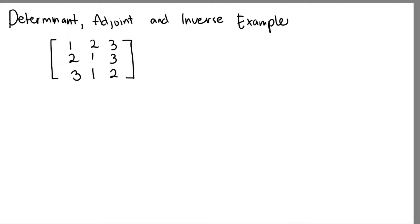In this video, we're going to determine the determinant, the adjoint, and the inverse for a sample square matrix with order 3. For the determinant, we can use two methods: the diagonal method or the rule of Sarrus.